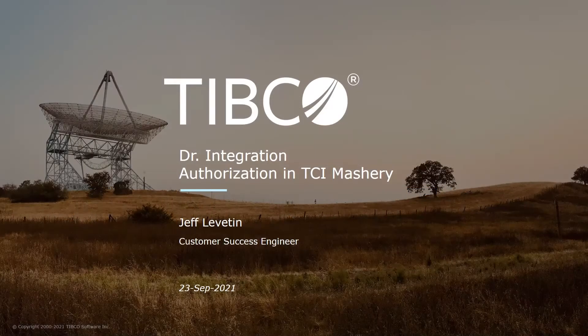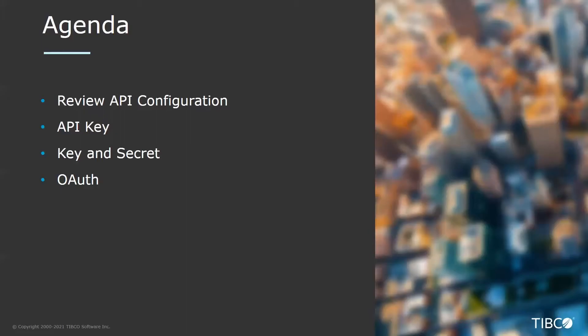Hey, welcome everybody. This is our September session for Docker integration. This month, we want to go over the authorization methods in TCI Mashery for API management. On our agenda, we're going to have a quick review of how to configure an API within Mashery, and then we'll go over the three most common methods you have for authorization: the first is an API key, the second is using a key and a secret to create a signature, and finally we'll go over how to use OAuth.